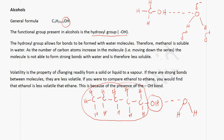Volatility is the property of changing readily from a solid or liquid into a vapor. If there are strong bonds present between the molecules, they are less volatile. If you were to compare ethanol to ethane, you will find that ethanol is less volatile than ethane, and this is because of the presence of the OH bond.